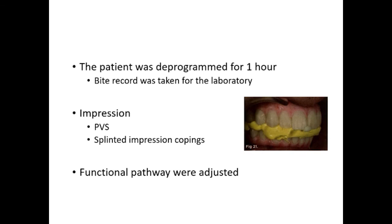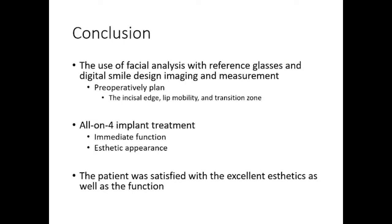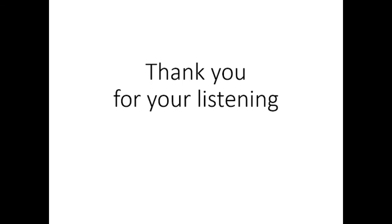An open tray vinyl polysiloxane impression was taken with splinted impression copings. The functional pathways were adjusted by positioning the patient in an upright seated position to maximum intercuspation. The framework chosen for the base of the final prosthesis was high-performance polymer, and individual crowns were made to fit over the framework. The use of facial analysis with reference glasses and digital smile design imaging allowed the clinician to fully preoperatively plan the incisal edge position, lip mobility, and transition zone. All-on-4 implant treatment offered immediate function and aesthetic appearance without grafting, and the patient was satisfied with excellent aesthetics as well as function.